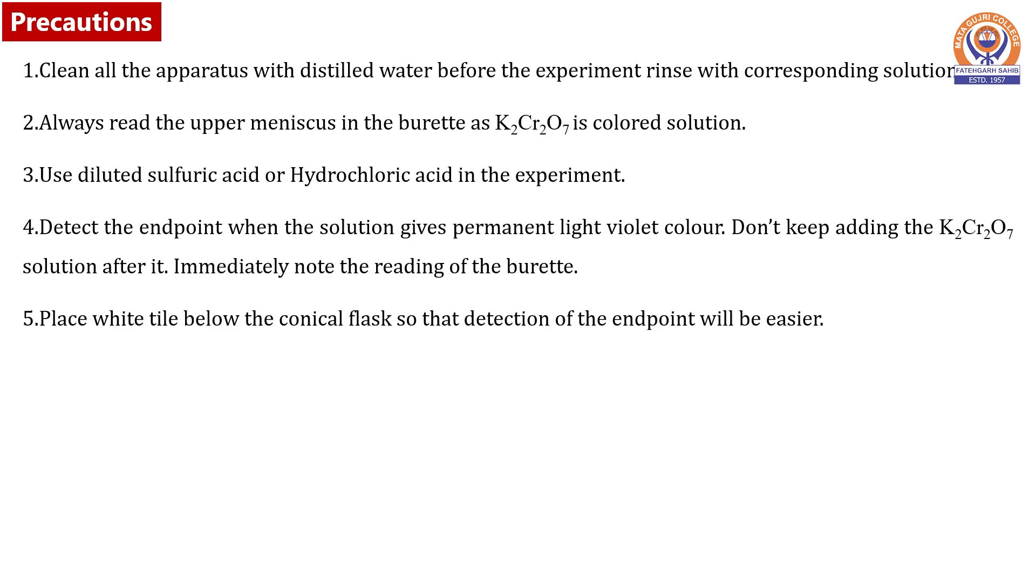Equal volumes of dilute sulfuric acid or hydrochloric acid is added to the titration flask. No heating is required during titration. Detect the endpoint when the solution gives permanent violet color. Don't keep adding the potassium dichromate solution after it.